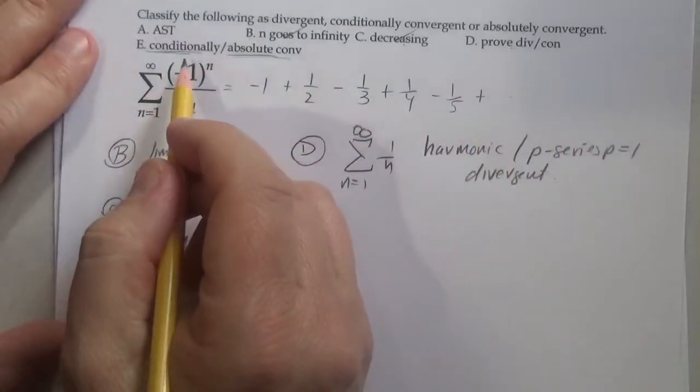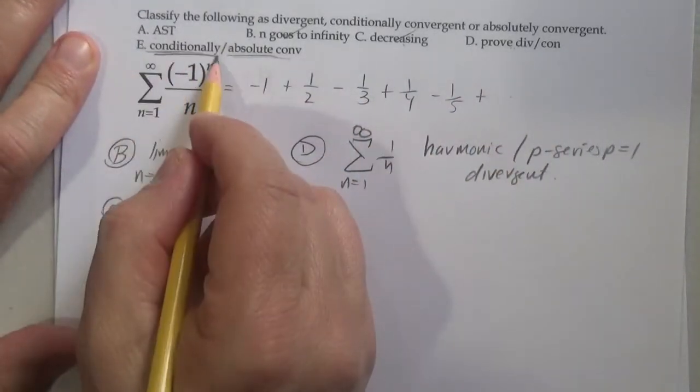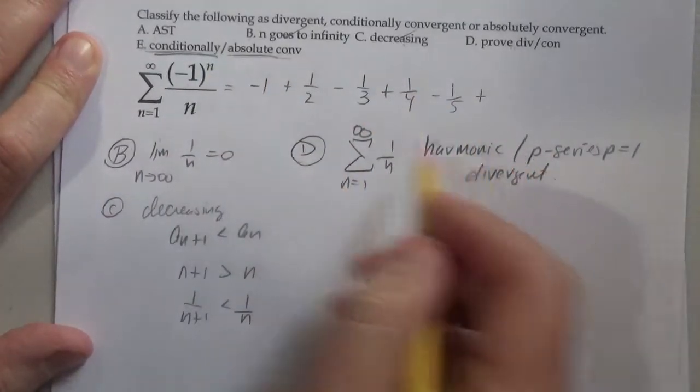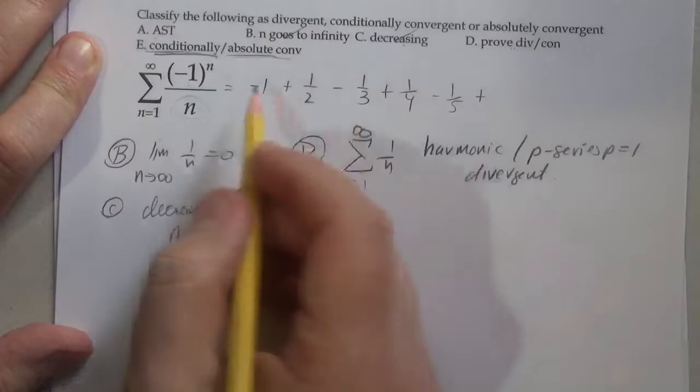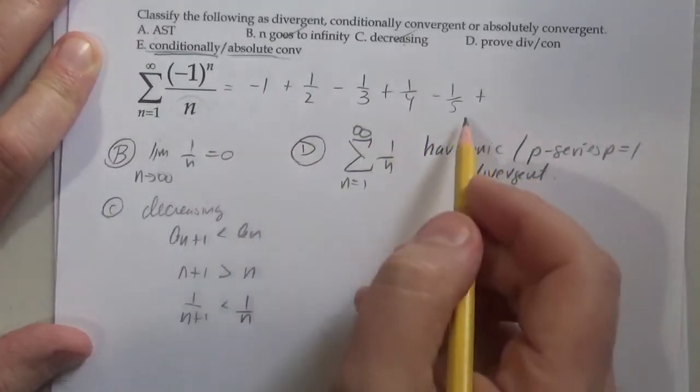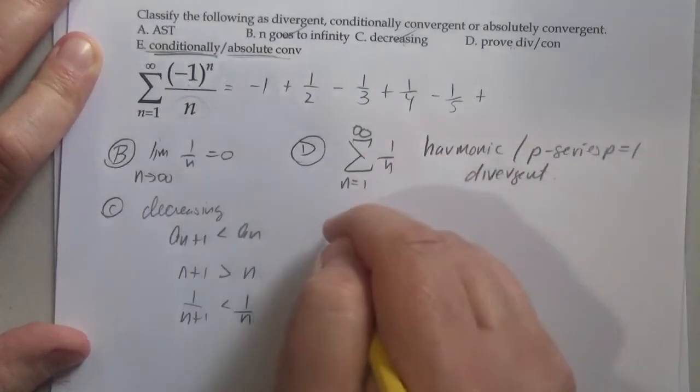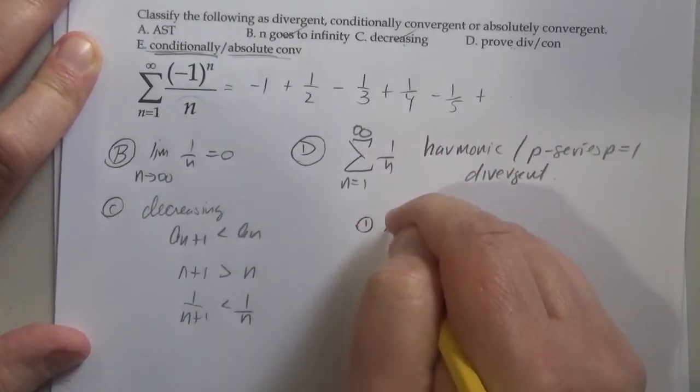So what is my conclusion? My conclusion is conditionally convergent. Why? Because without the alternating, this series diverges—the 1 over n diverges. If I have the alternating, it will converge. So the things we want to write down: number one,